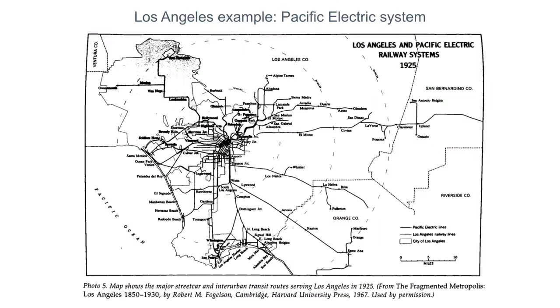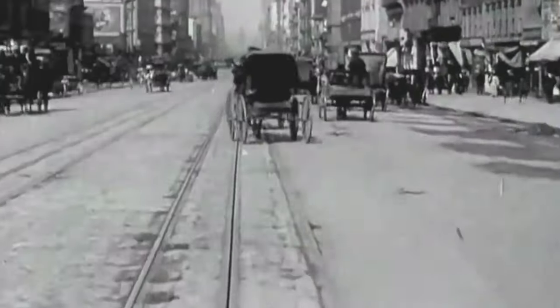Here's an image of the Pacific Electric System in Los Angeles. If you know Los Angeles, this pattern of routes is very similar to the freeways developed after these interurban railways. So the original sprawl-inducing effects in Los Angeles were from streetcars rather than the freeway.